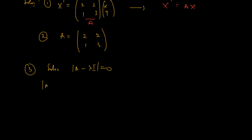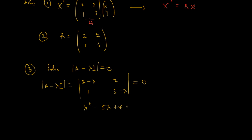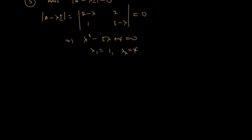So that's what we want to solve. A minus lambda·I gives us the matrix [[2-λ, 2],[1, 3-λ]], and we equate the determinant to 0. When we simplify, what we get is λ² - 5λ + 4 = 0. When we factorize and solve this, we get λ₁ = 1 and λ₂ = 4. As noted in the previous video, these two eigenvalues are distinct.